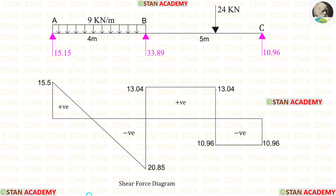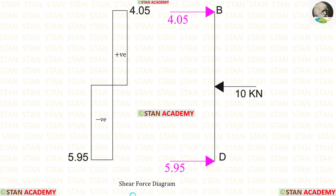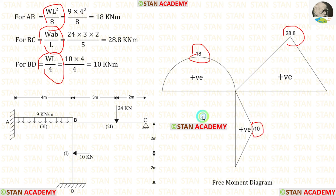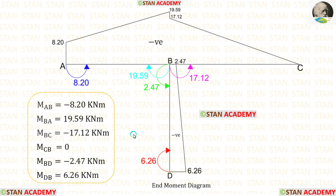Now let us make the shear force diagram in spans AB and BC using the vertical loads and reactions, and then the shear force diagram in column BD using the horizontal load and reactions. We are also going to draw the bending moment diagram. First, let us make the free moment diagram by assuming every span as a separate simply supported beam and using the appropriate formulas. Then let us make the end moment diagram using these moments.